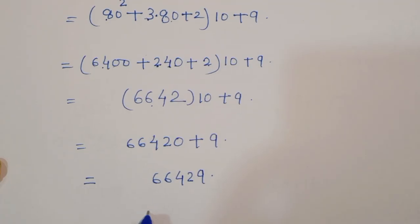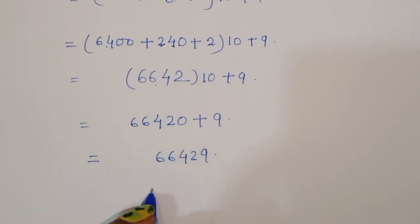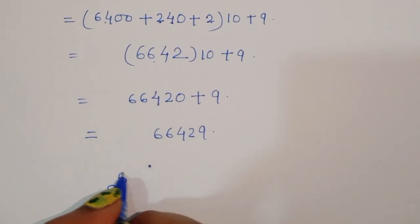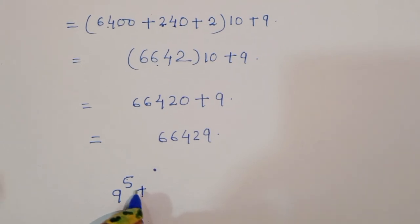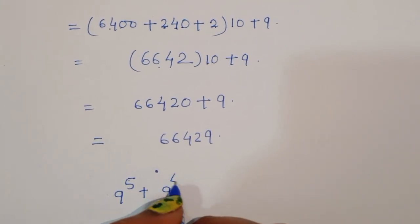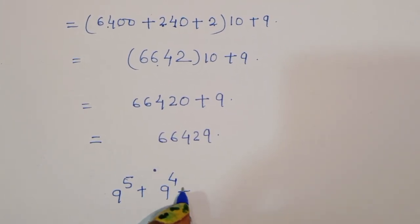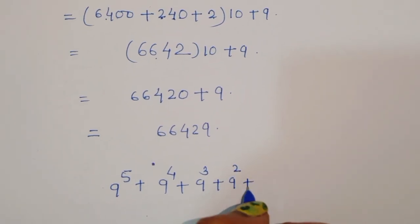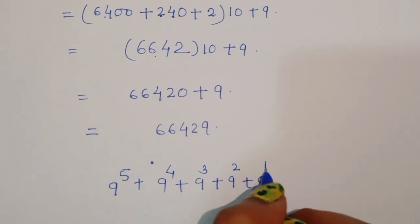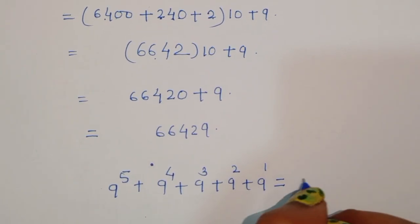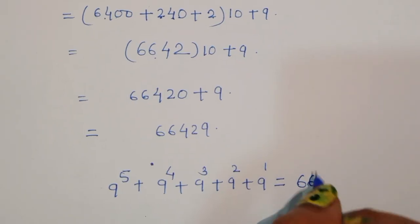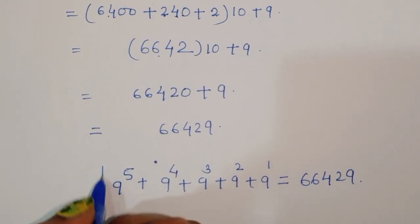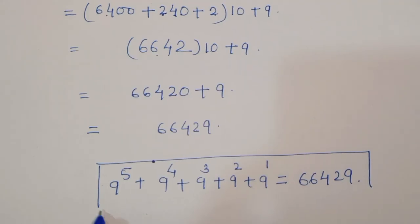So we got the value: 9 power 5 plus 9 power 4 plus 9 power 3 plus 9 power 2 plus 9 power 1 is equal to 66,429. We got this value and this is the solution.